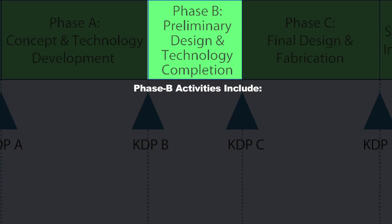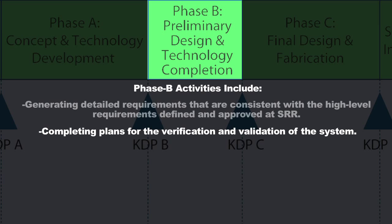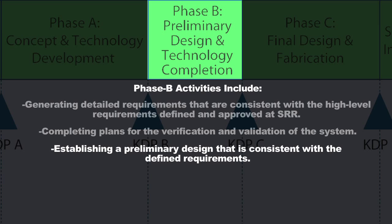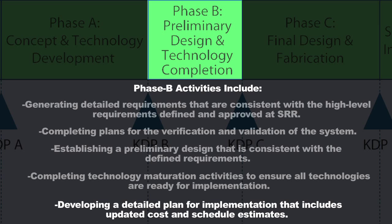Phase B activities include generating detailed requirements that are consistent with the high-level requirements defined earlier in Phase A and approved at the System Requirements Review, completing plans for the verification and validation of the system, establishing a preliminary design that's consistent with the defined requirements, completing technology maturation activities to ensure that all technologies are ready for implementation, and developing a detailed plan for implementation that includes updated cost and schedule estimates.